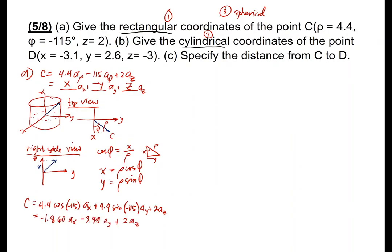The only important thing you need to remember is how to visualize — from cylindrical, draw the diagram. Drawing is very important. Then afterwards, you can easily solve for the equivalent values. Now let's solve for B.